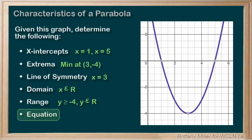Finally, let's determine the equation of this graph. We notice that it has been translated 4 units down and 3 to the right, making our equation x minus 3 squared minus 4.